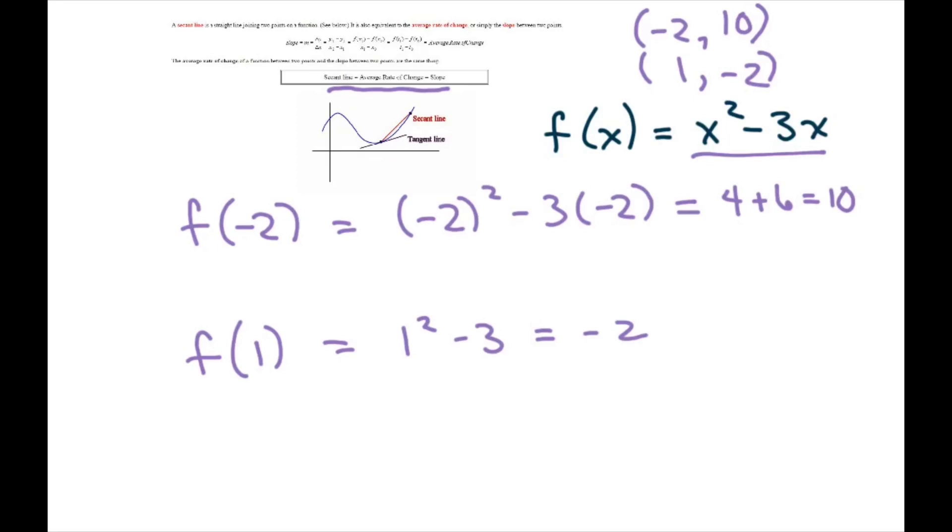Alright. And then we have to find the slope and we just use this right here. And I'll call this point 1, this point 2. It doesn't really matter. But when you use your slope formula, we're going to get negative 2 minus 10 divided by 1 minus a negative 2. So this is going to be negative 12 over 3, so our slope is negative 4.